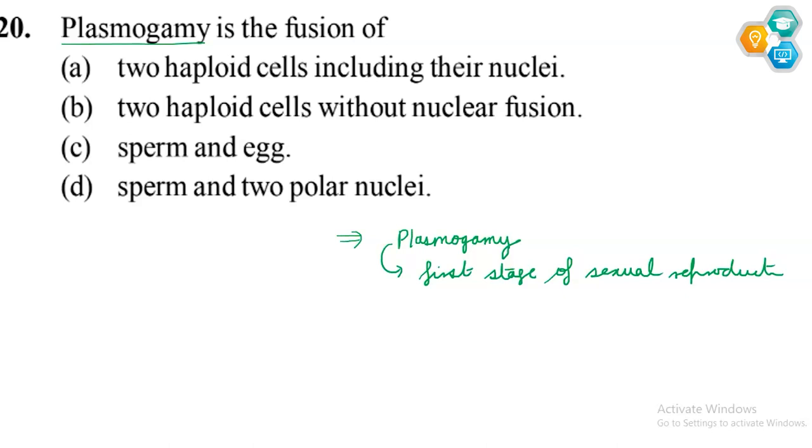If we talk about plasmogamy, it is the first stage of sexual reproduction. What happens in it is fusion of sex cells, basically. If we understand in more detail, it is fusion of cytoplasm, to be more specific.